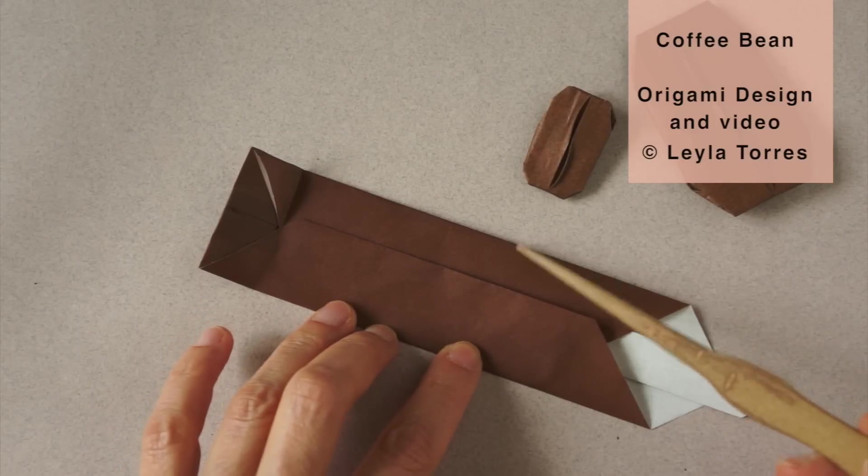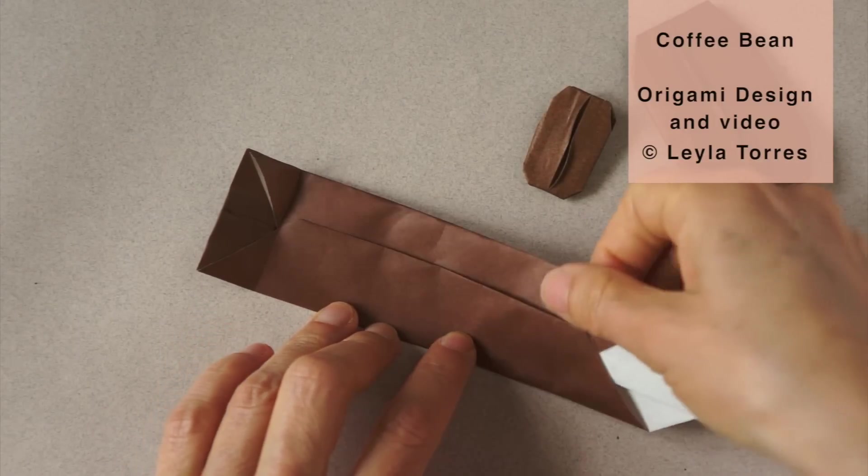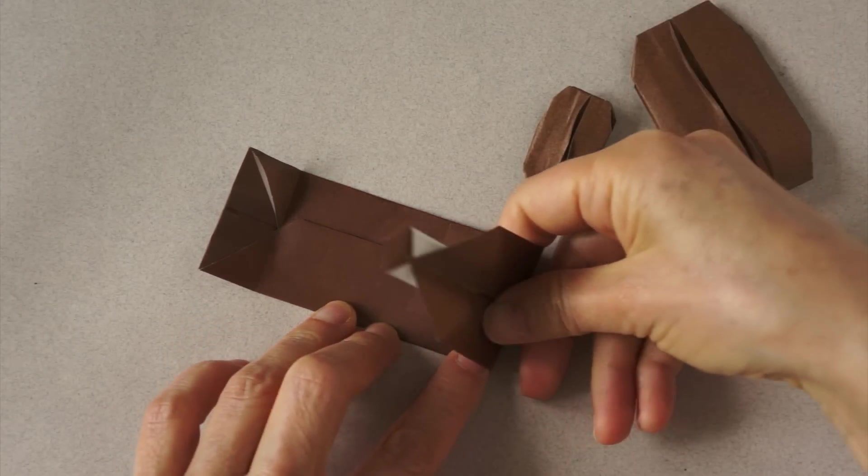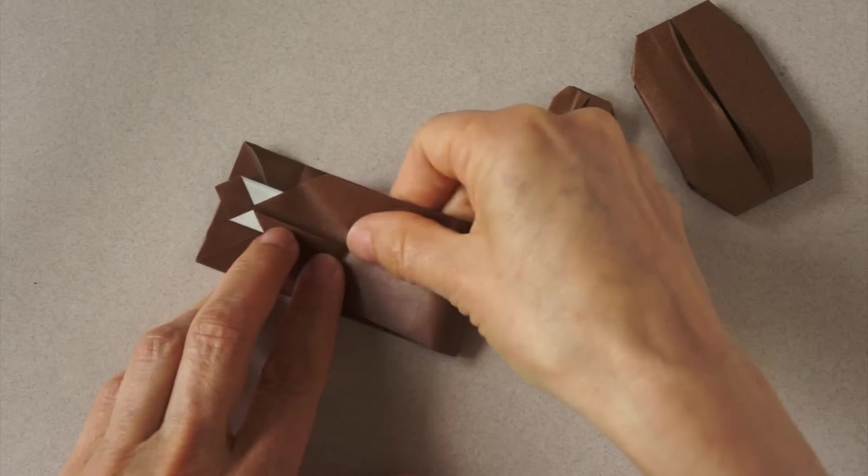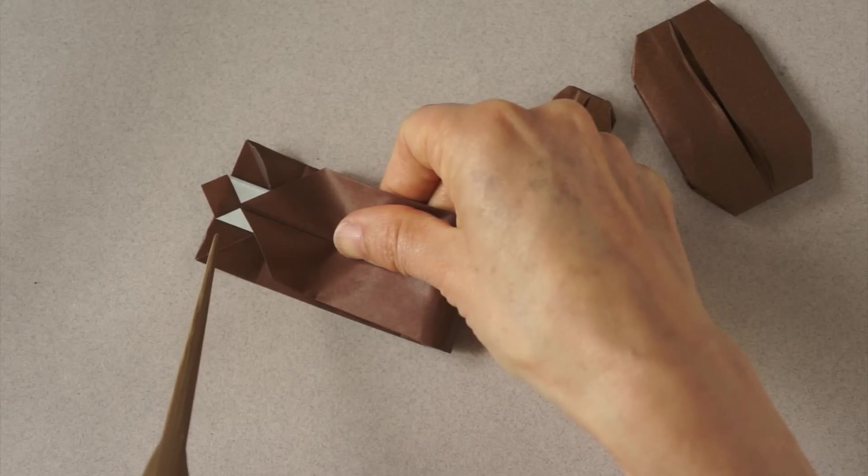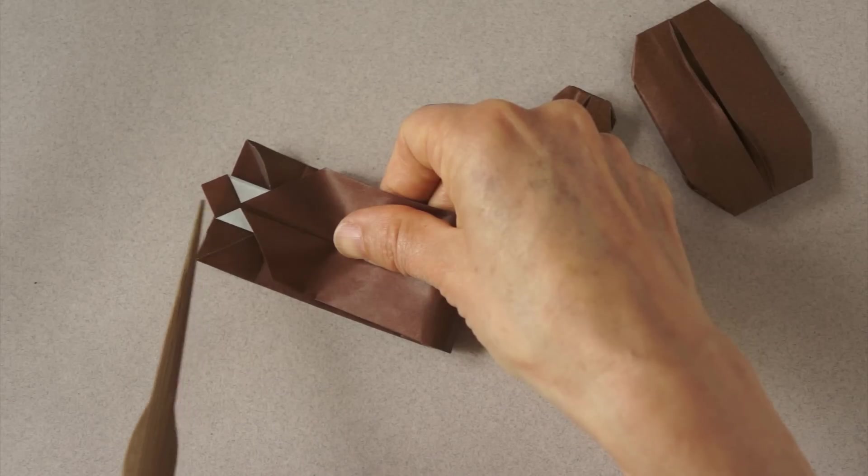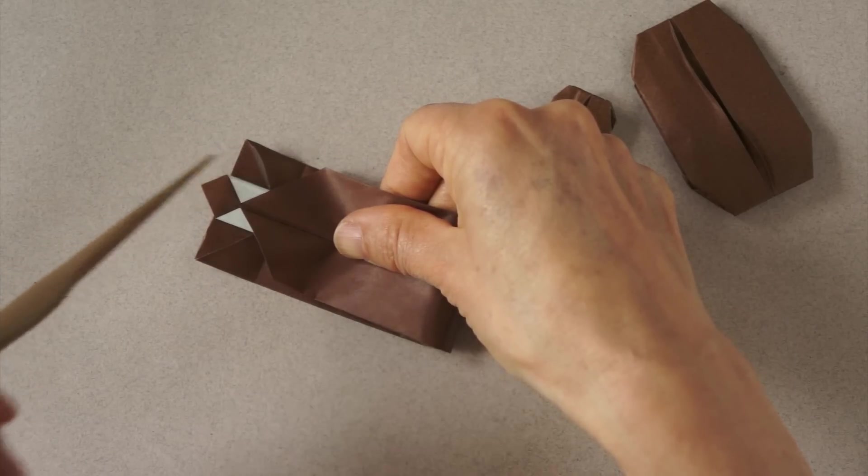We are going to make another fold about here by bringing the right side to the left. And we are going to make the corners of this tiny diamond and match the edge.